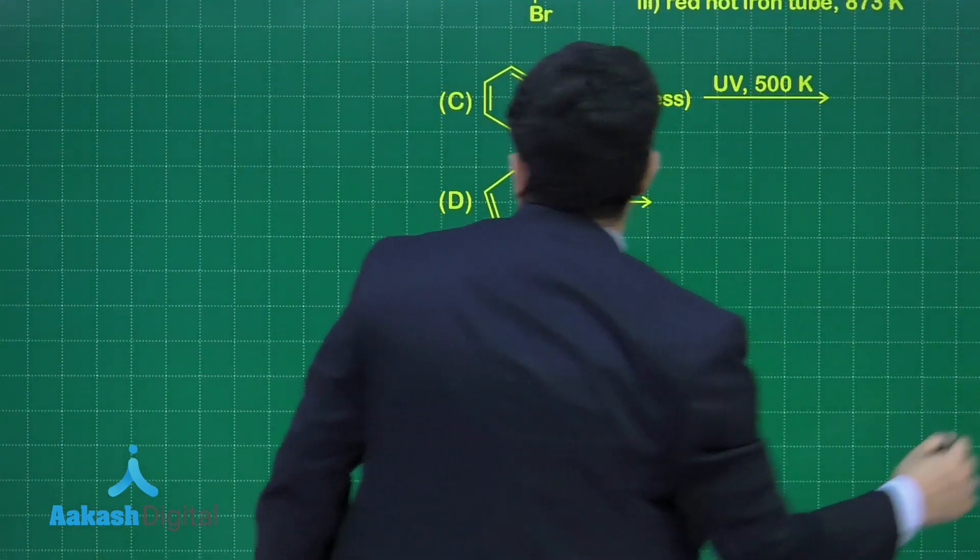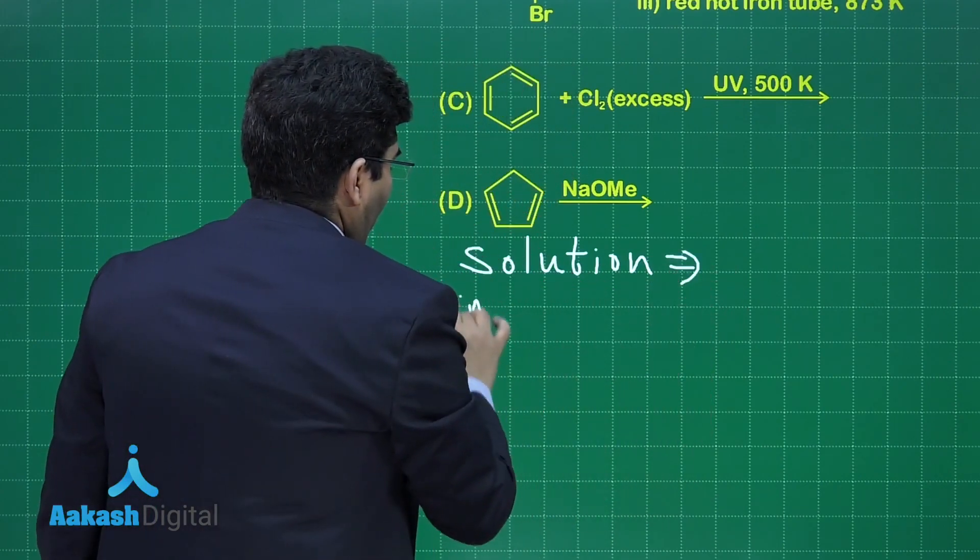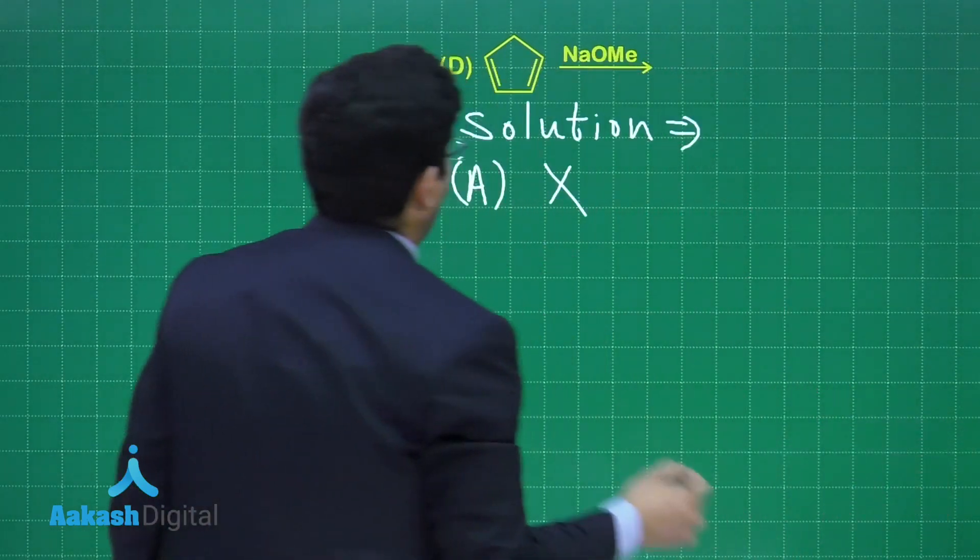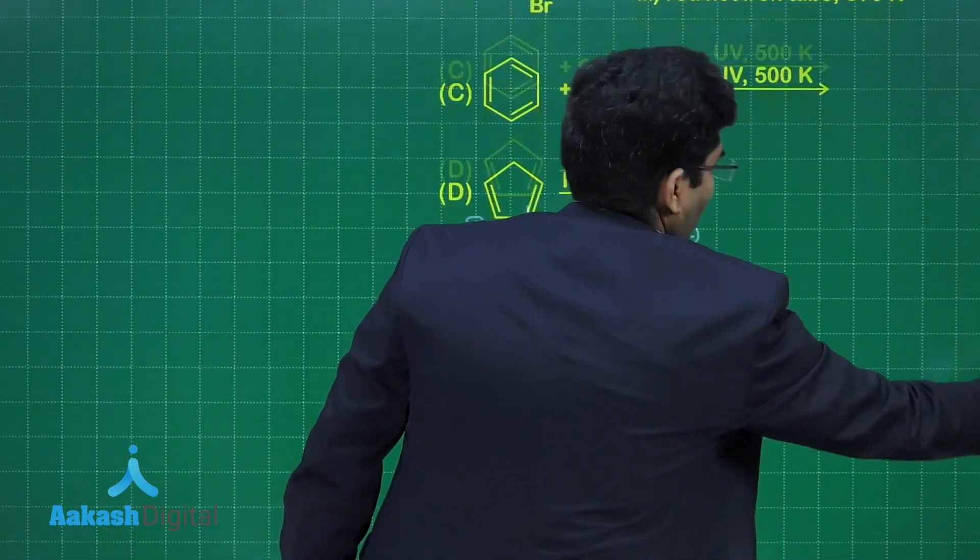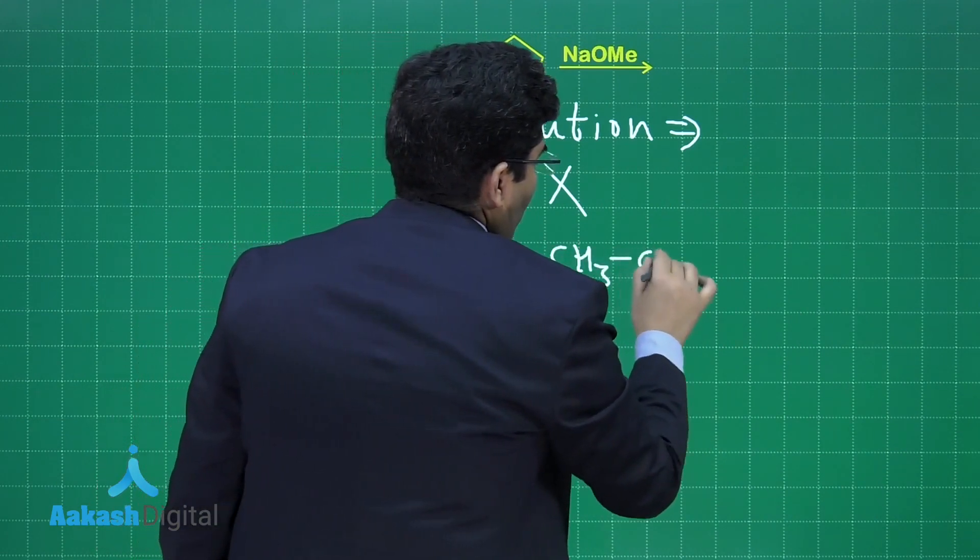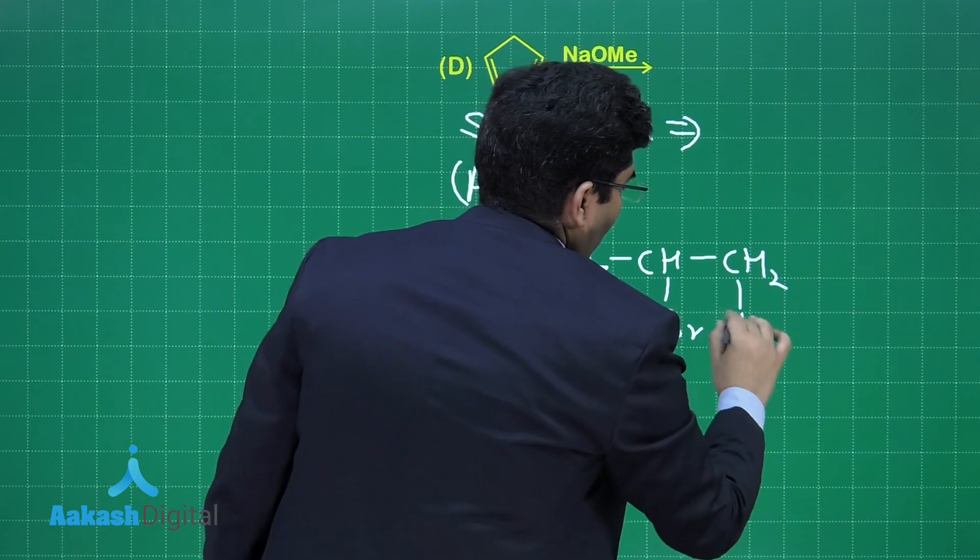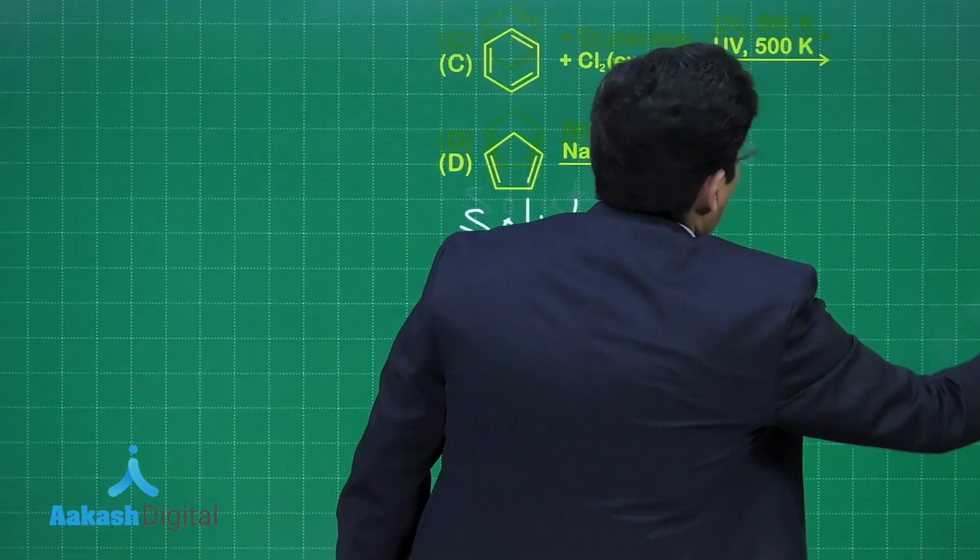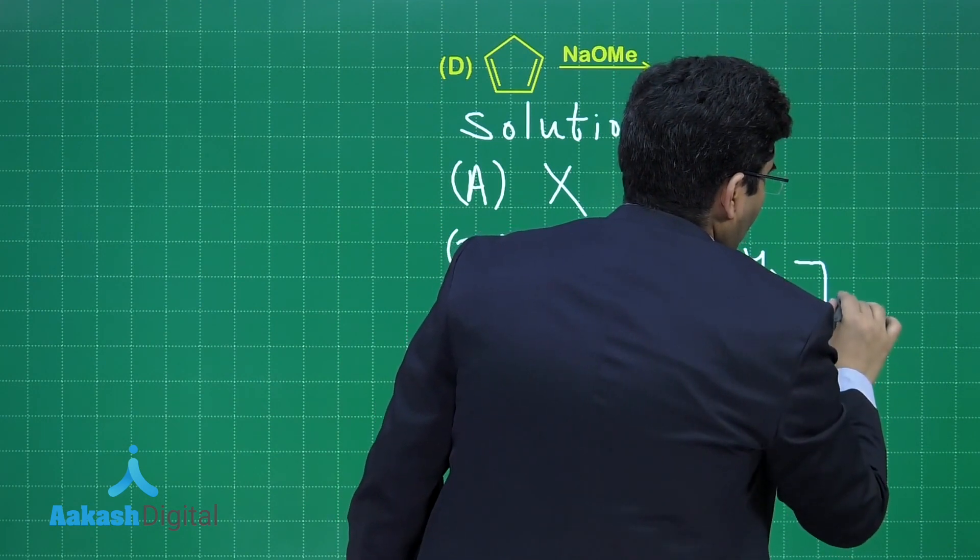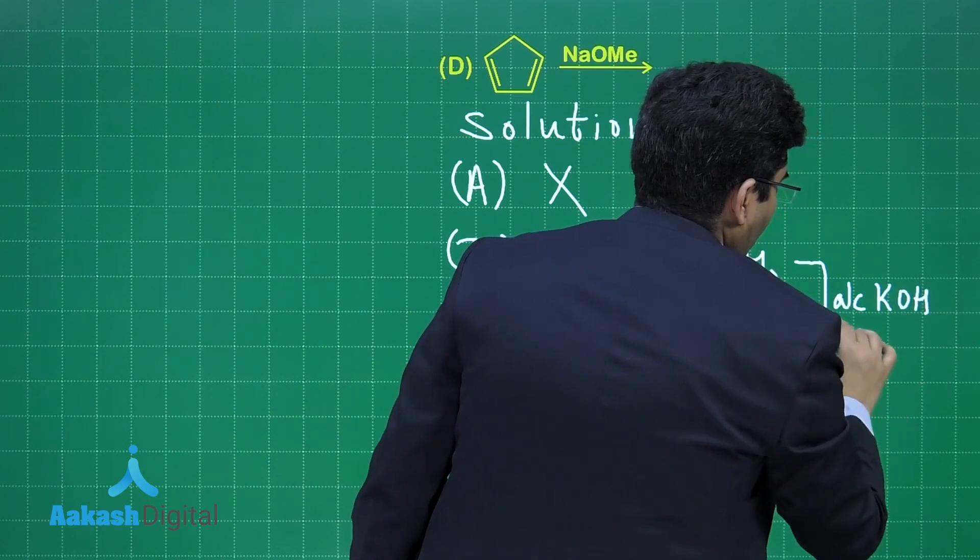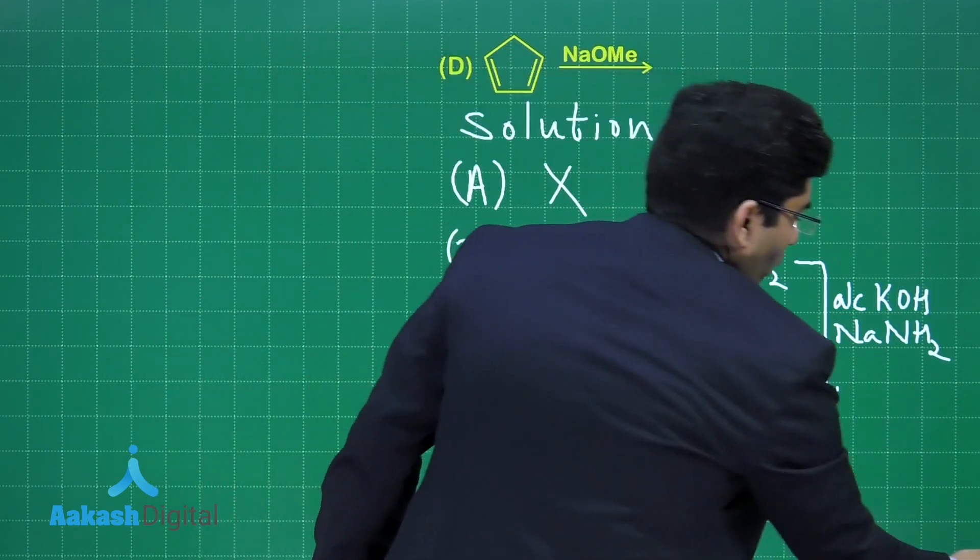So it will not form. Let's move on to the second one and start our solution. A is not the correct answer. If you talk about B, then B is vicinal dibromide. So it is CH₃-CH-CH₂ with Br here and Br, reacting first with alcoholic KOH, then NaNH₂.